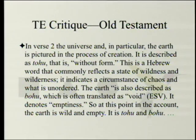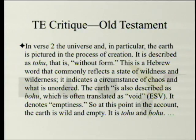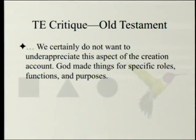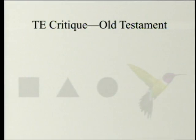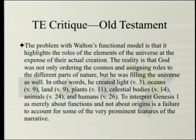In verse 2, the universe and in particular the earth is pictured in the process of creation. It is described as tohu — that is, without form — a Hebrew word that commonly reflects the state of wildness and wilderness, indicating a circumstance of chaos and what is unordered. The earth is also described as bohu, which is often translated 'void,' denoting emptiness. So at this point in the account, the earth is wild and empty — it is tohu and bohu. The problem with Walton's functional model is that it highlights the roles of the elements of the universe at the expense of their actual creation.